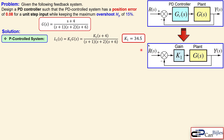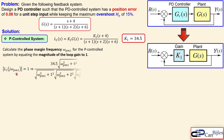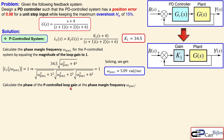Now let's calculate the phase margin frequency omega_pm for this P control system by equating the magnitude of the loop transfer function L1 to 1. Converting s to jω and taking the absolute value, then solving, gives omega_pm = 5.09 radians per second for the P-controlled system.